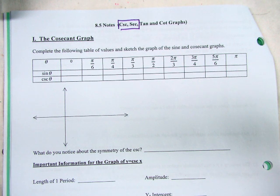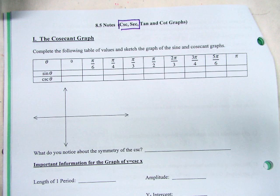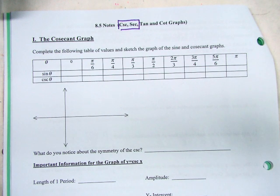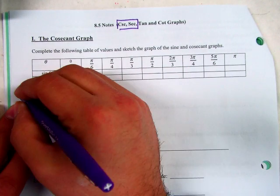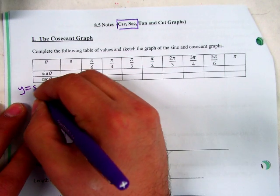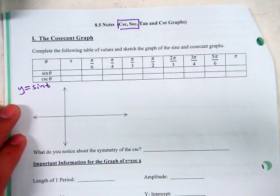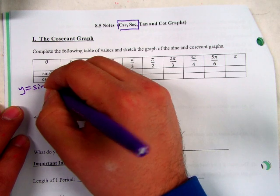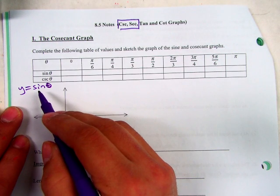Cosecant and secant, if you know how to graph sine and cosine, are actually really easy. How many of you can say that you know exactly what sine looks like? Just regular sine. Everybody should have their hands up. Otherwise, what are you going to do today on the quiz? How many of you can graph regular cosine? So we're going to do things a little differently than the way they are in the packet.